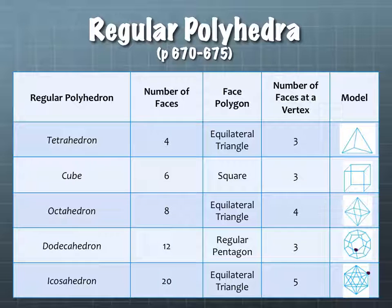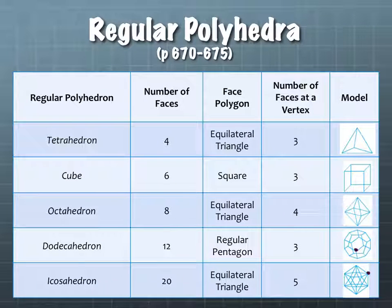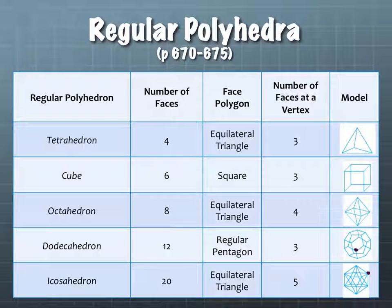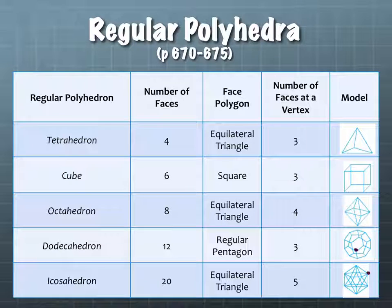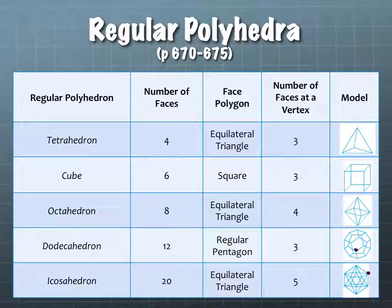So that one's an icosahedron. This chart is something you might want to write onto a note card. About the test on Monday: there is a review out online — I encourage you to print that off. You are allowed to bring one note card to your test. You may use both sides, front and back. It must be handwritten, so you can't take this chart and shrink it with a copier. If you want this chart, you need to handwrite it on your card.